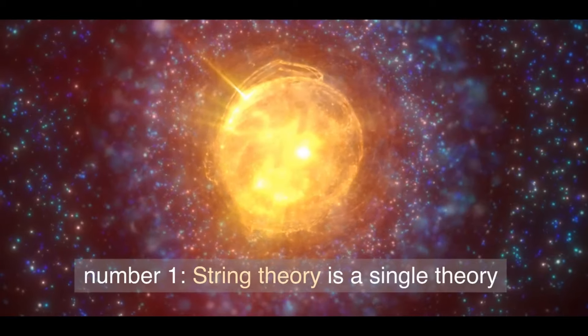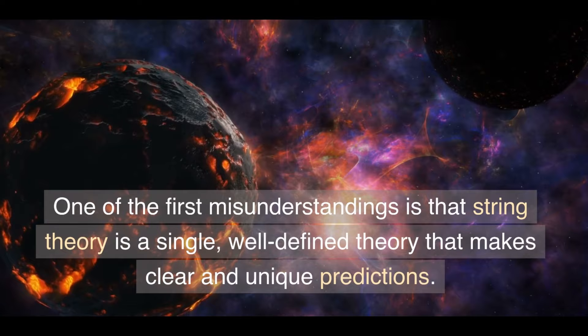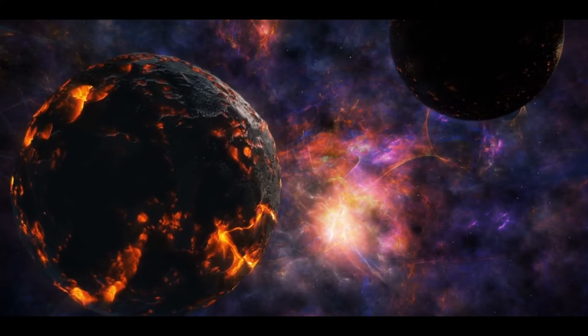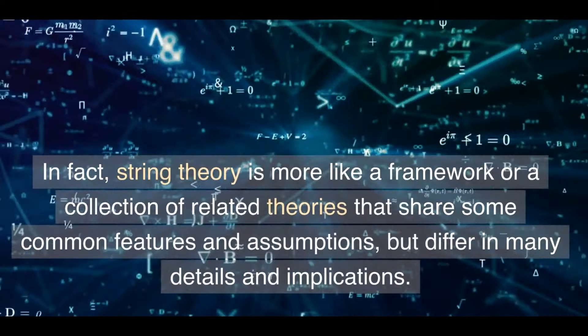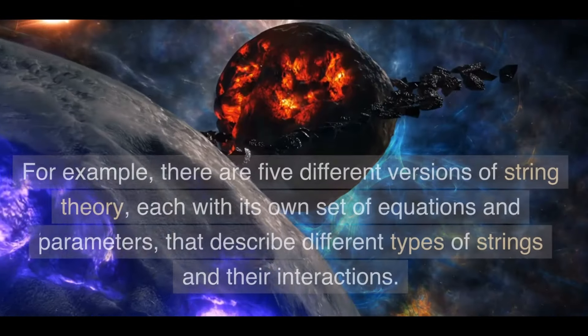Number 1: String theory is a single theory. One of the first misunderstandings is that string theory is a single, well-defined theory that makes clear and unique predictions. In fact, string theory is more like a framework or a collection of related theories that share some common features and assumptions, but differ in many details and implications.